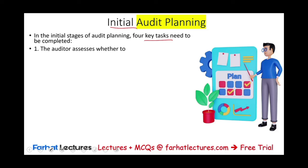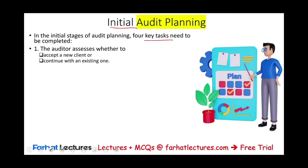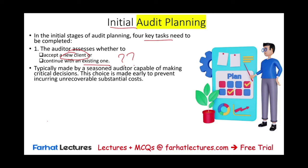What are those four key steps? First, we need to assess whether we should accept a new client or continue with an existing one. We don't want to just take any client, and even if we have an existing client, every year we would review whether we should keep this client or not. These decisions are made at a senior, partner level by seasoned auditors capable of making critical decisions.